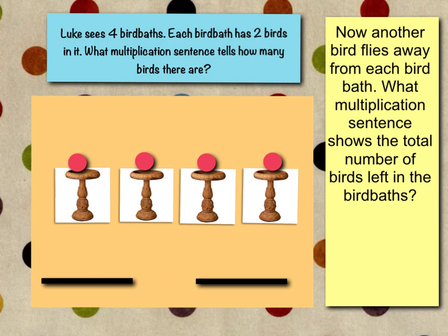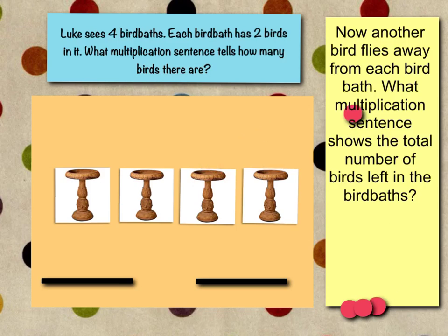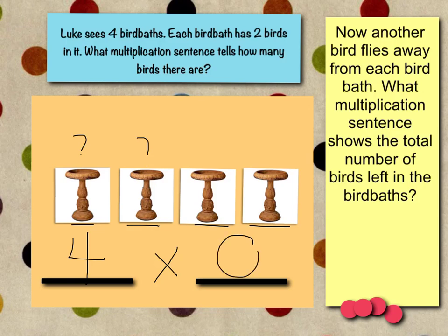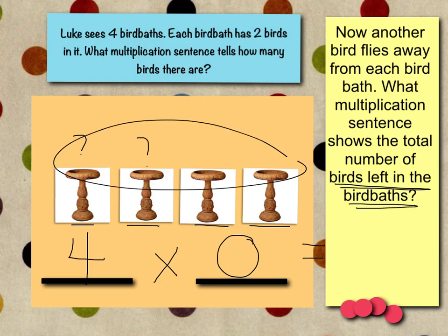Now we're going to change the problem up again. We had one bird fly away from each bird bath last time. Now another bird flies away from each bird bath. What multiplication sentence shows the number of birds left? We're going to fly another bird away from each bird bath — this bird, and this bird, and this bird, and this bird. Now we've got a new multiplication sentence. How many bird baths? We still have four bird baths. But now, how many birds are in each bird bath? Zero. There are zero birds in each bird bath. So four times zero — how many birds are left? Zero. Now we know four times zero is zero.